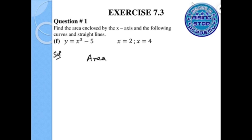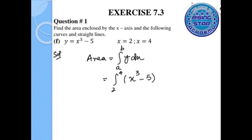In the next part, we write the area formula: A equals the integral from a to b of y dx. The lower limit is 2, the upper limit is 4, and the function is x cubed minus 5. Integrating, we get x to the power of 4 over 4 minus 5x, evaluated from 2 to 4.